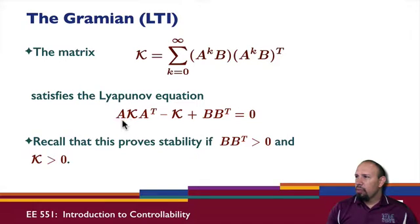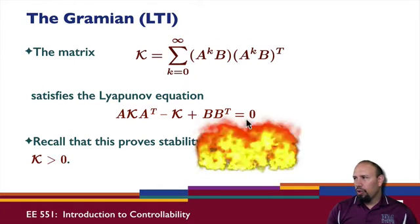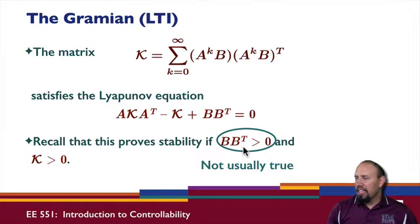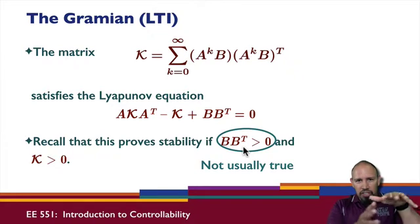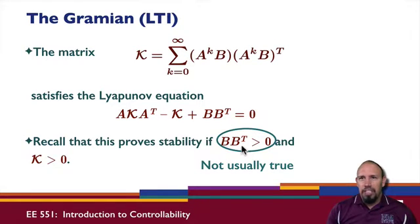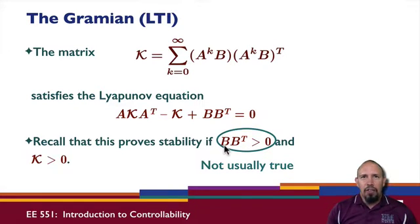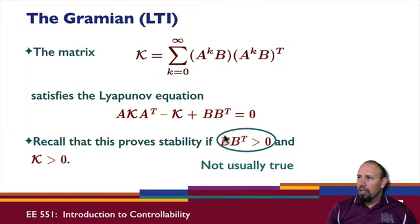This Lyapunov equation would prove stability if BB transpose is positive definite and K is positive definite. In general, however, we won't have BB transpose positive definite — if you have a single-input system, B is just a column, so BB transpose is positive semi-definite, not positive definite. Generally you will have fewer inputs than states. But we can still prove stability, and we'll come back to this when we talk about controllability and use the Lyapunov equation to prove stability.